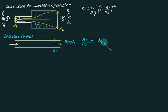What is HL for exit? HL for exit is simply equals to 1, V1 square. I will simply write V square because it is the same velocity. This is V square by 2g.